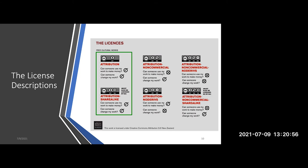The third column on the right starts with CC BY ND — that's Creative Commons Attribution Non-Commercial No Derivatives. Can someone use my work to make money? No. Can someone change my work? No. But remember, with all of these last three, the BY is still there — the credit must be given to the owner of the work.